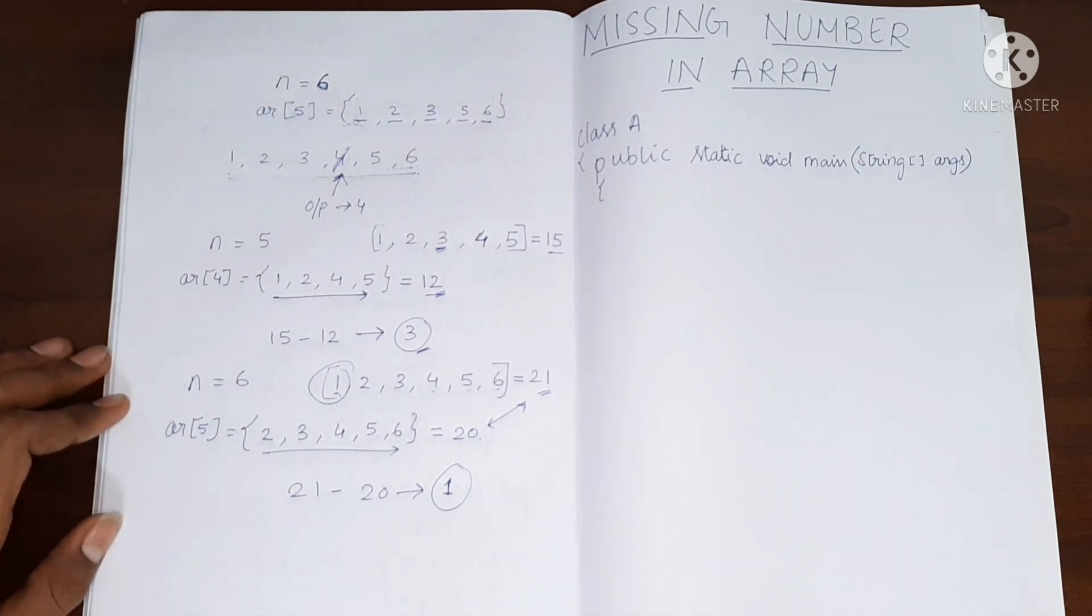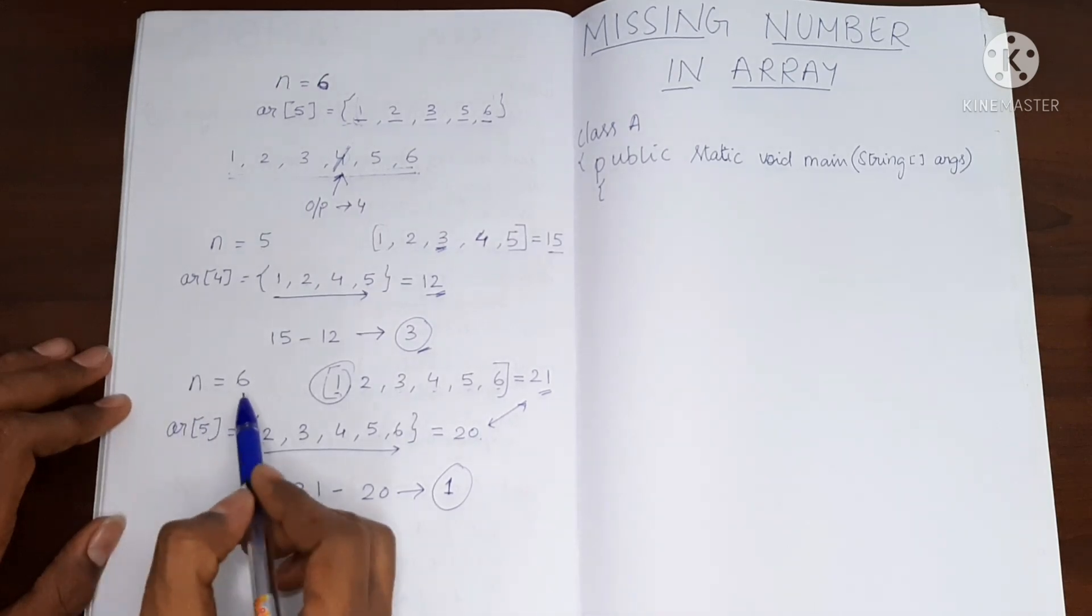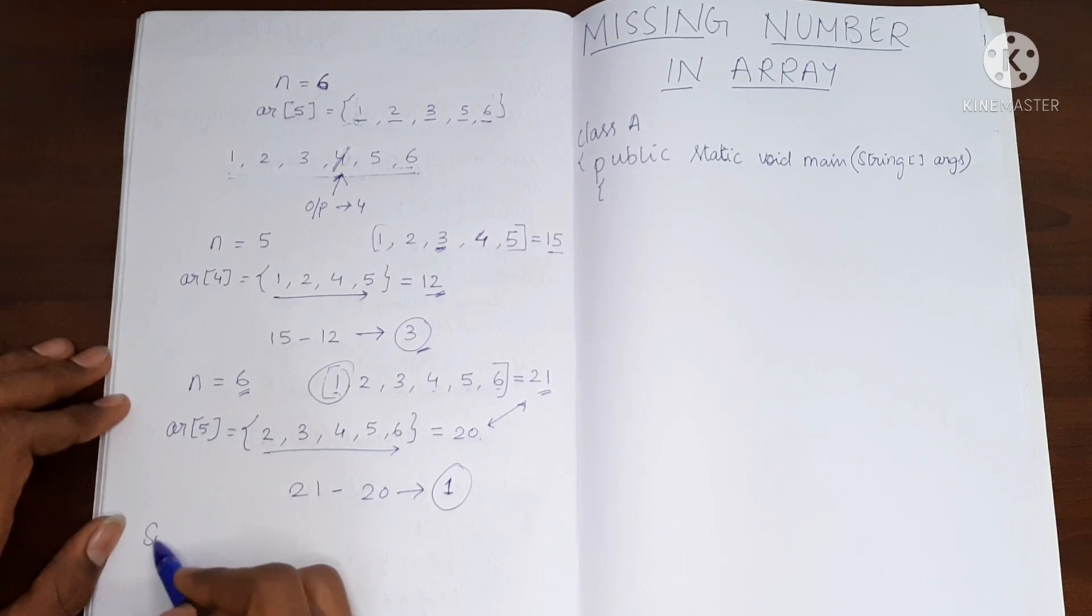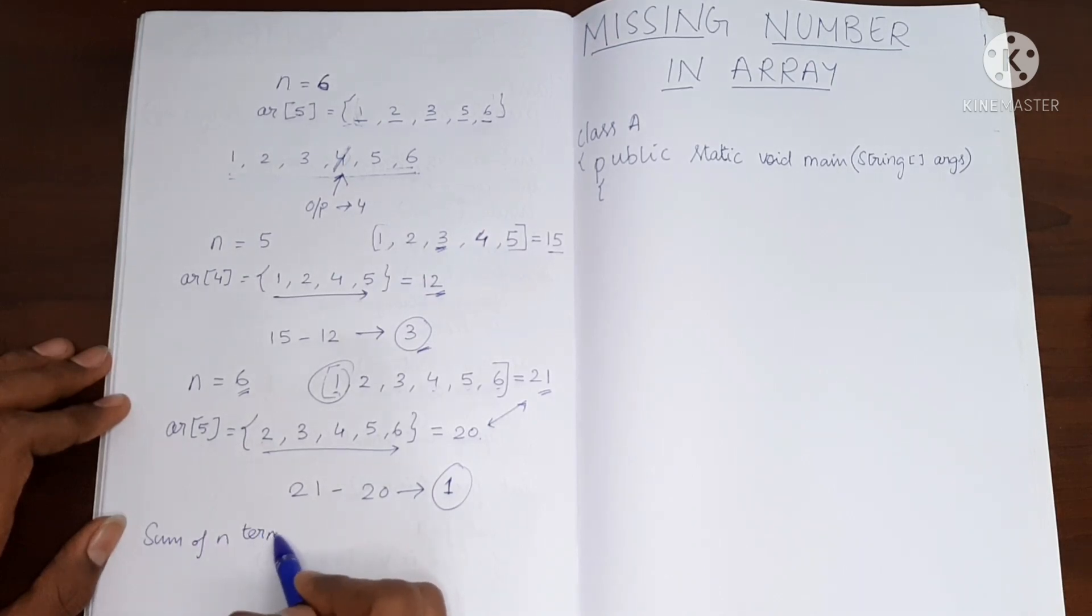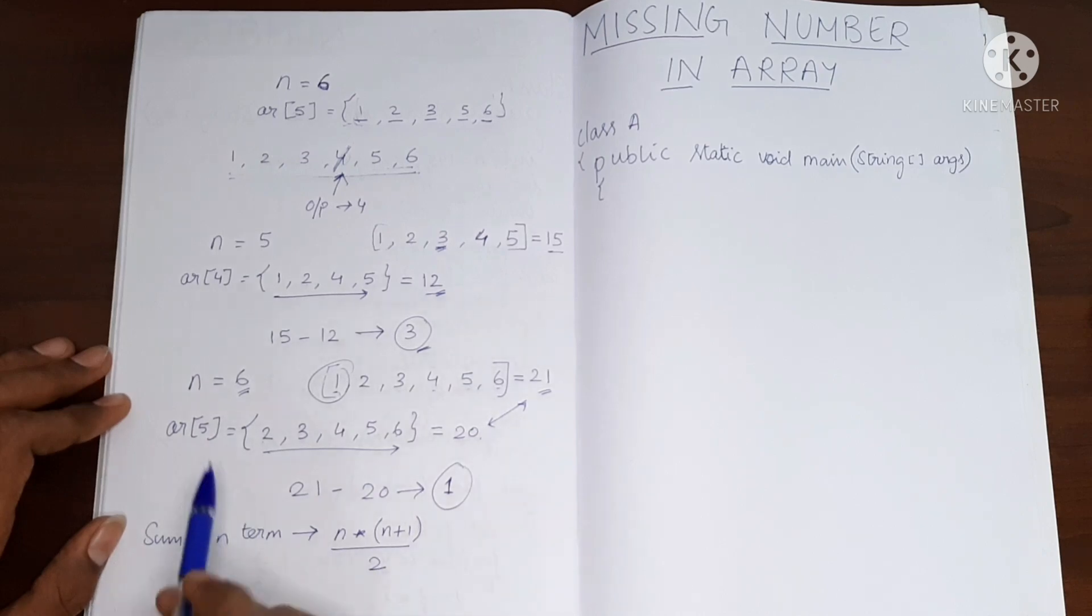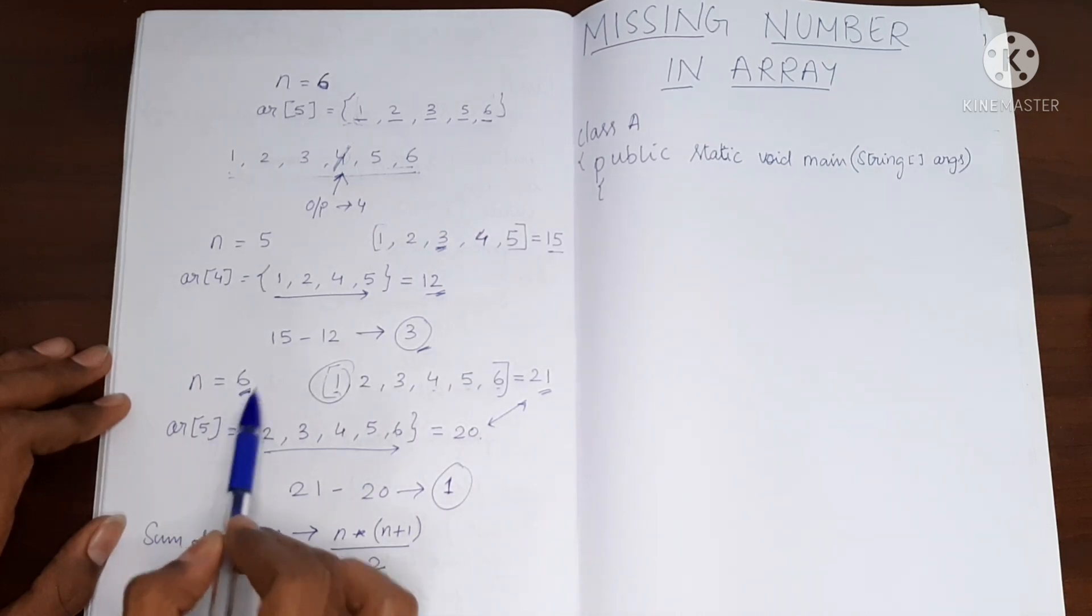So this is how we are going to find it. So if we have n as 6, we are going to find sum of n terms. So we have a formula for that: it will be n into n plus 1 by 2.